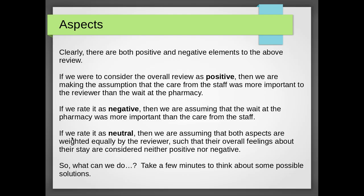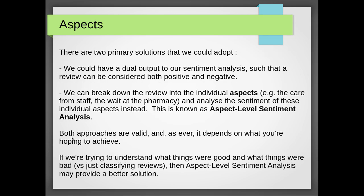So if you had a think about how we might solve this problem, here are some ideas. I think there are two primary solutions we could adopt. One option is we could have a dual output to our sentiment analysis — we don't have to have a single output in our neural network. We could have a dual output so that rather than considering reviews as positive, negative, or neutral, we can say that a review is considered both positive and negative.